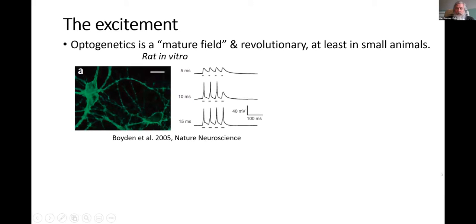This is a figure from the original paper by Ed Boyden and Karl Deisseroth in 2005. These are cultured rat hippocampal neurons that are expressing an opsin called channelrhodopsin-2. When you pulse light at these cultured neurons, for short durations you get depolarizations, and longer durations or higher power, you'll get the neurons making action potentials very reliably.